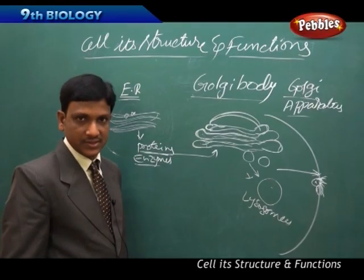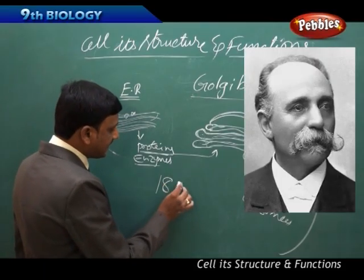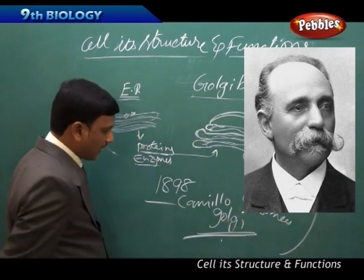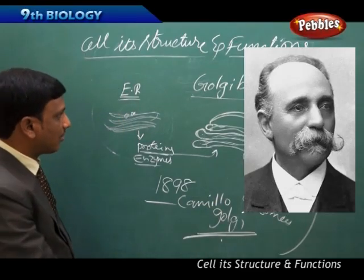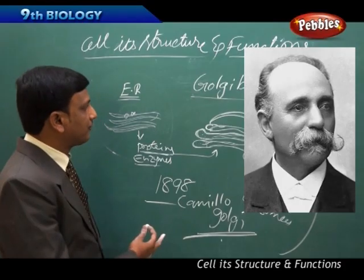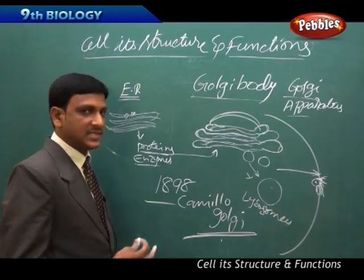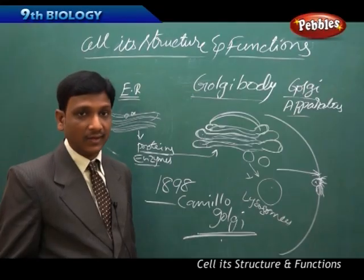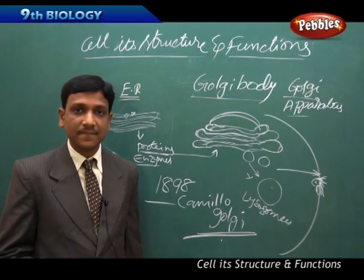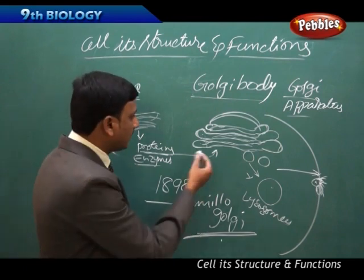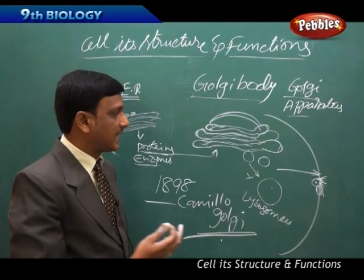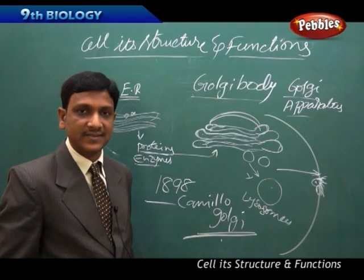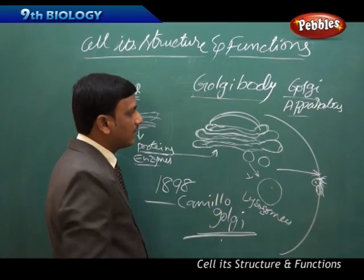The Golgi bodies or Golgi apparatus were observed by the scientist Camillo Golgi, and in his honor this organelle is named after him. The number of Golgi bodies varies from one cell to another. Cells of organs involved in secretion — like the pancreas or salivary glands — contain a greater number of Golgi bodies, because the Golgi bodies are involved in packing and secreting enzymes and proteins.